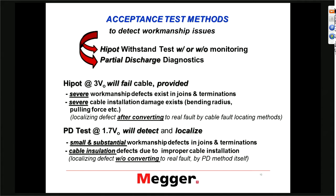What will this test reveal? It will reveal severe workmanship defects in joints and terminations, and severe cable damage from the installation. The issue — and that's why I underlined the word 'severe' — is that if there are smaller type defects in these categories, the hypot test typically will not make them fail. The way we can see that we have an issue is basically by failing the cable at that location.